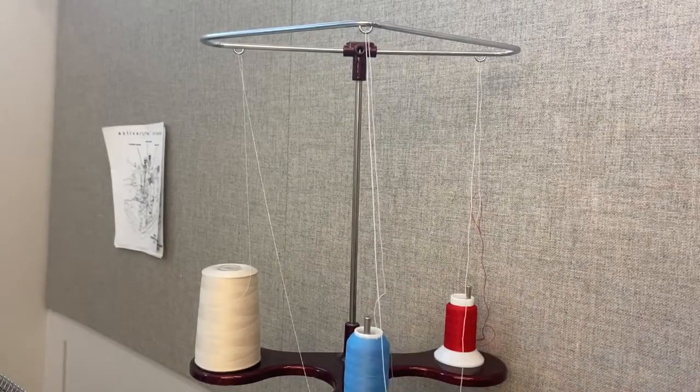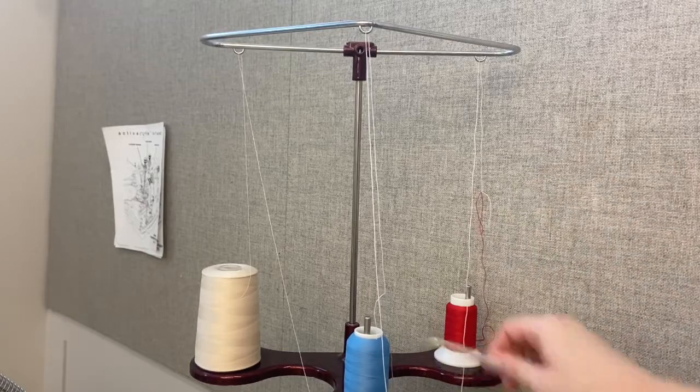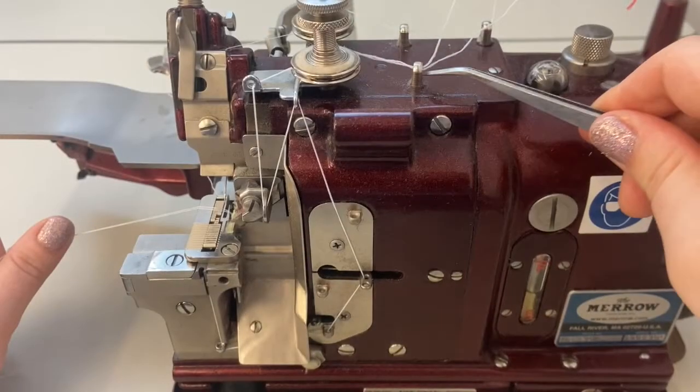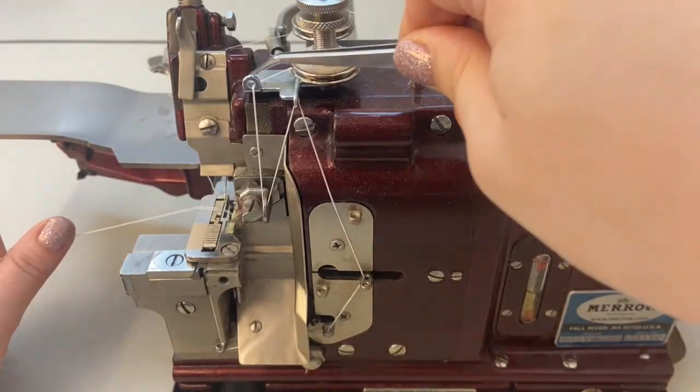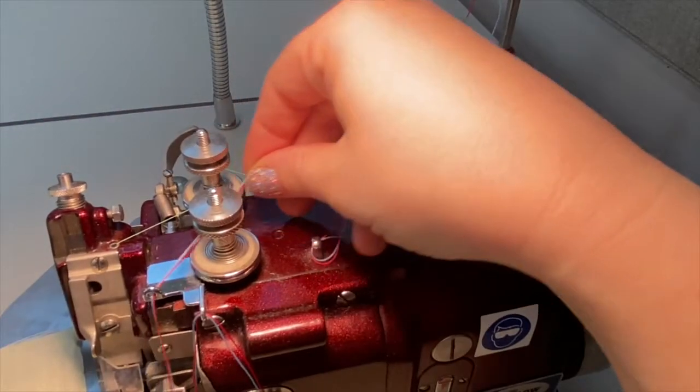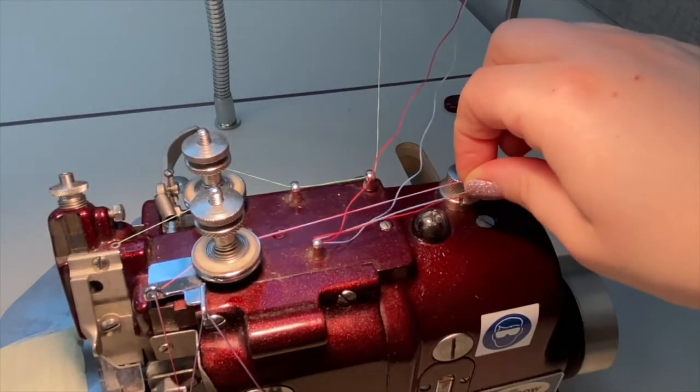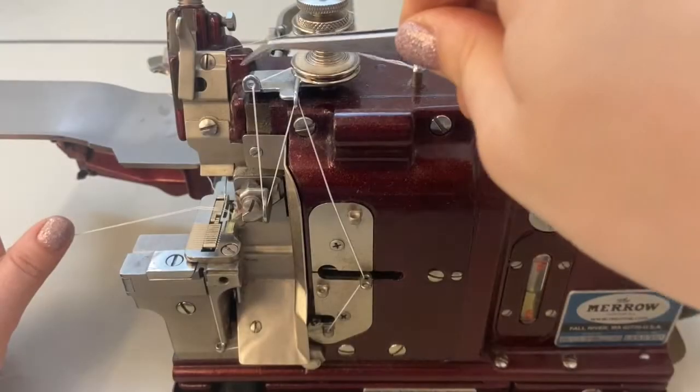Bring the two woolly nylon threads up through their thread guides on the cone stand and down towards the machine. These two threads will now travel together as one. Bring the threads through the stationary tension guide and through the tension plates on top of the machine. It is important with this machine that you wrap the threads in one full rotation between these plates to guarantee proper tension.